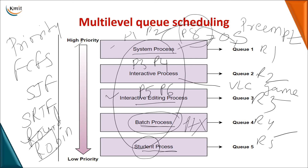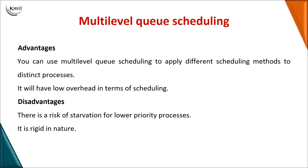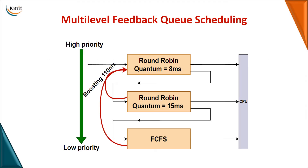The problem with multi-level queue scheduling is starvation: a process in a lower-priority queue may never get CPU time. Additionally, once a process is assigned to a particular queue, it cannot be moved to another queue. To overcome these problems of multi-level queue scheduling, we move on to multi-level feedback queue scheduling.